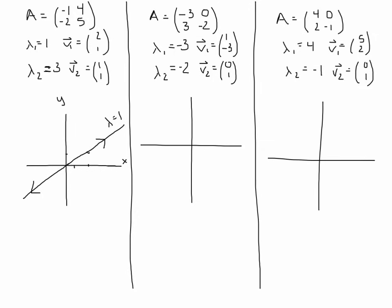For the second eigenvalue of lambda equals 3, the eigenvector is (1, 1). We draw a line through (1, 1) and the origin. Again, the eigenvalue is positive, so solutions go away from the origin. We mark it lambda equals 3.